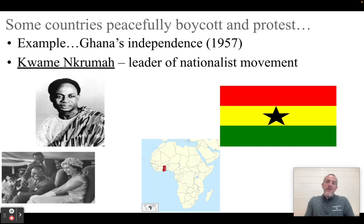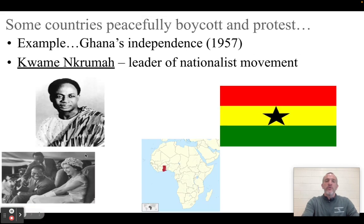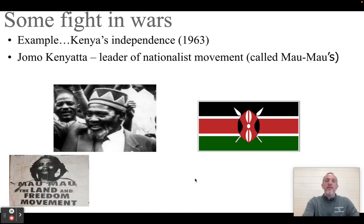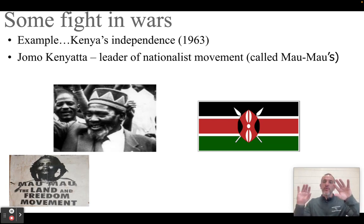Other places try to peacefully boycott and protest but it doesn't work, and they have to fight and use violence. One example is Kenya. Their leader is Jomo Kenyatta — easy to remember: Kenya, Kenyatta. He's the leader of a nationalist group called the Mau Mau, and they actually fight a war against the Europeans in order to gain their independence. So some people negotiate their independence peacefully; others have to fight wars and get their independence after they win.